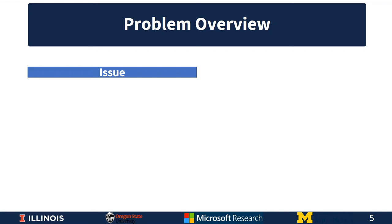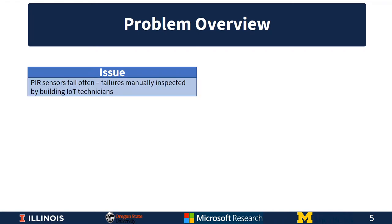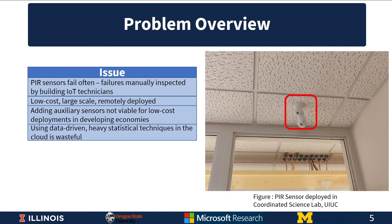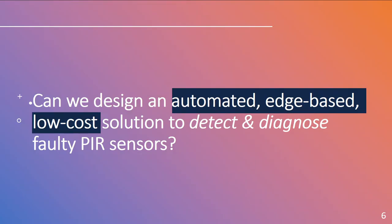The issue is that PIR sensors fail often, with failures being manually inspected by building IoT technicians. These sensors are low in cost, large in scale, and are remotely deployed, often at inaccessible locations in a building. Additionally, adding auxiliary sensors is not viable for low-cost deployments, particularly in developing countries. Lastly, using data-driven heavy statistical techniques in the cloud is wasteful of network bandwidth. So we ask: can we design an automated edge-based low-cost solution to detect and diagnose faulty PIR sensors?